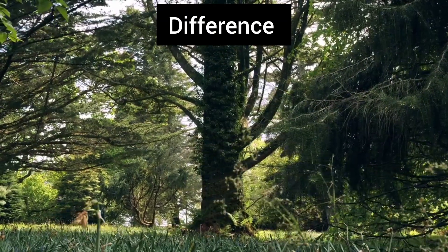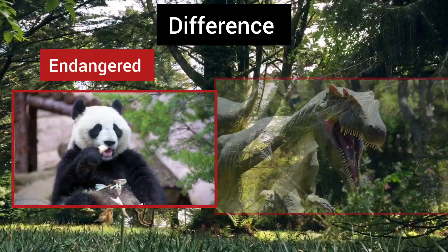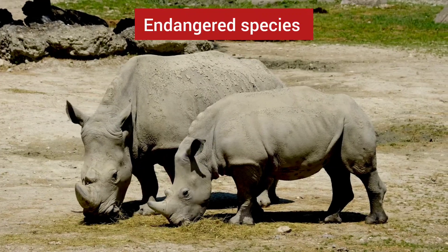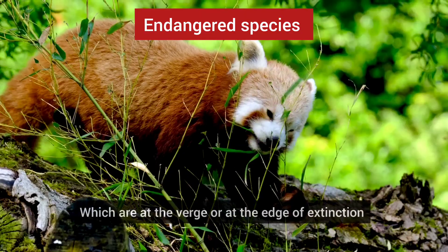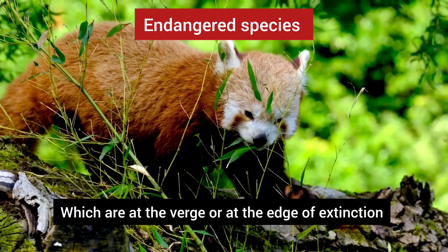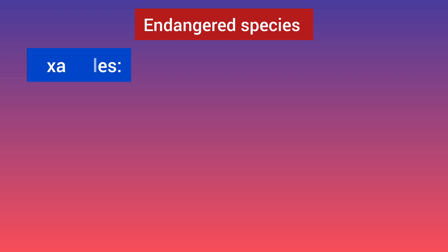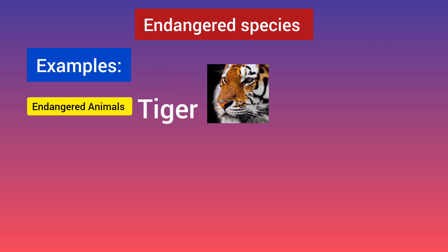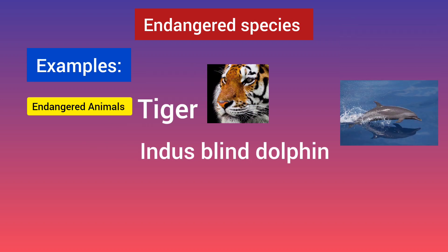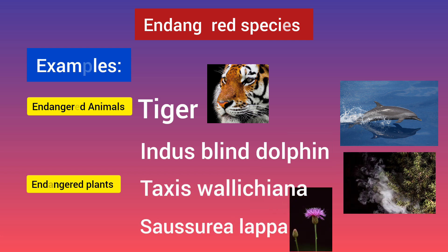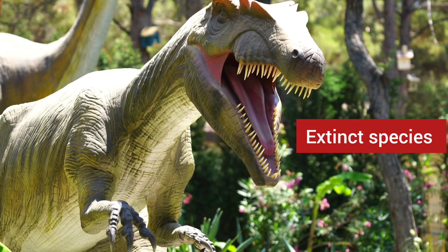The difference between endangered and extinct species: endangered are those species which are at the verge or at the edge of extinction. For example, tiger, Indus blind dolphin, and in plants, Texas valetiana and cesuria lappa.